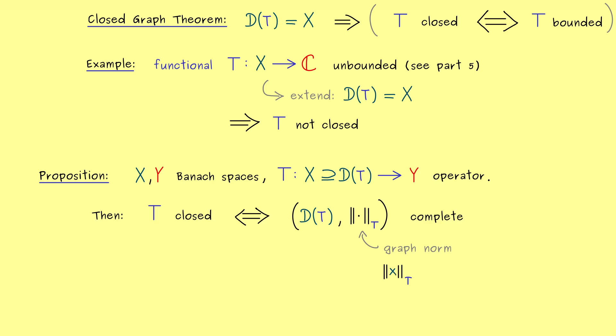And indeed this is not so complicated. You can just put in any point x from the domain. And then you just use the original norm of x and also add the norm of the image. So this is T in the norm of Y.